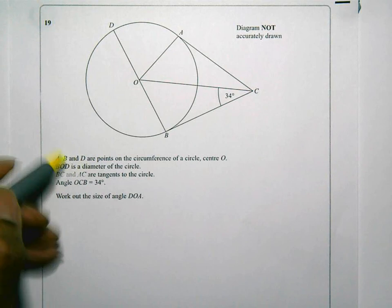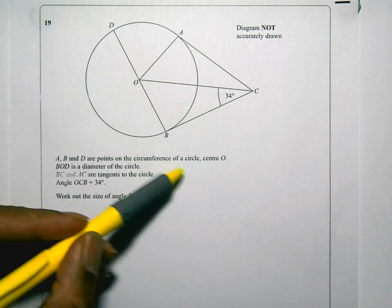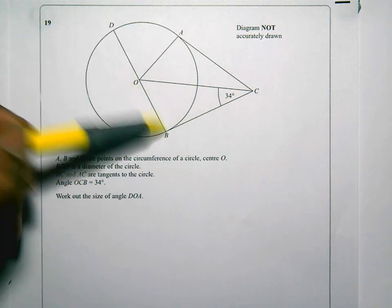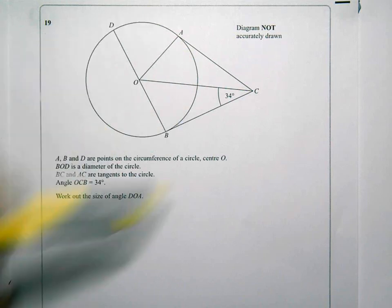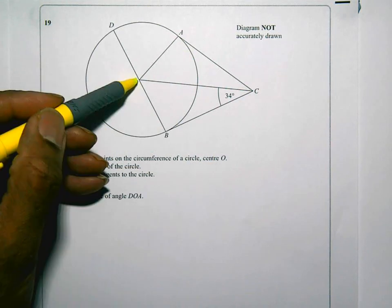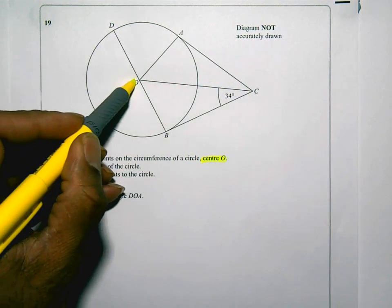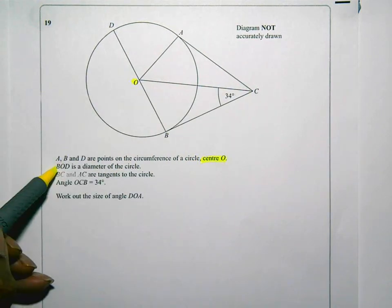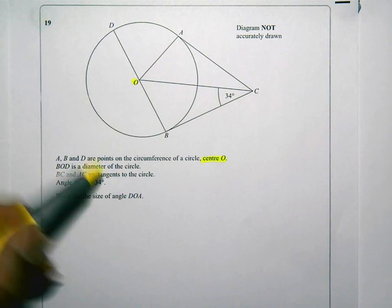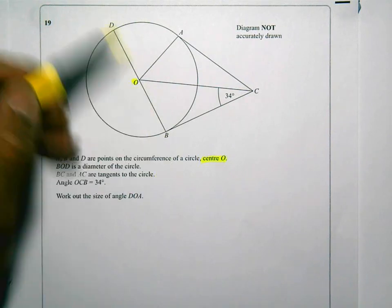A, B, and D are points on the circumference of a circle. So A, B, and D, they're on the edge, the circumference of the circle. And the center of the circle is O. That's really important. If they tell you the center of the circle, that's going to be of some significance. BOD is the diameter. So that goes all the way across, and it's the diameter of the circle.